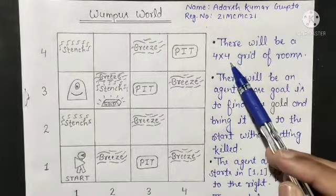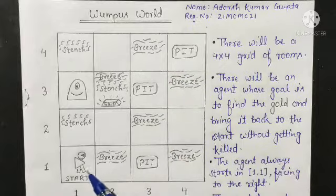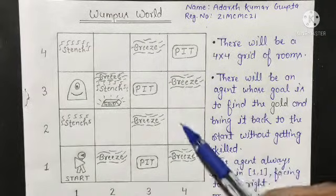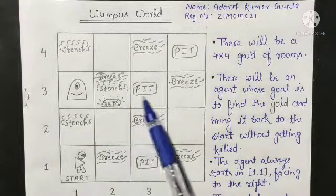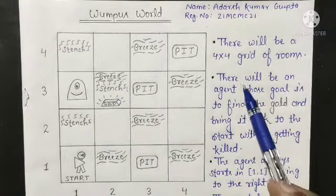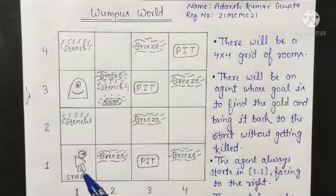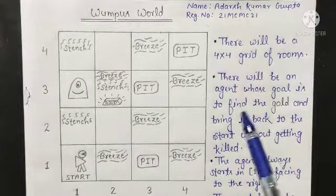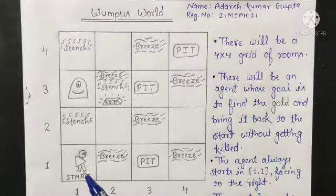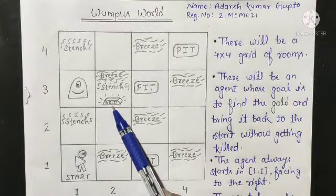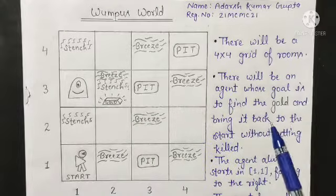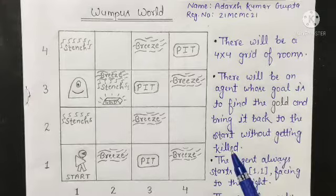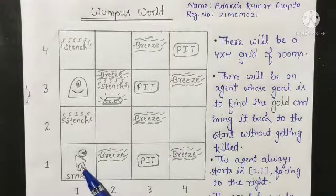There will be a 4x4 grid of rooms. There are 4 columns and 4 rows, meaning there are 16 squares or 16 rooms. There will be an agent whose goal is to find the gold and bring it back to the start without getting killed. This is the agent's goal.